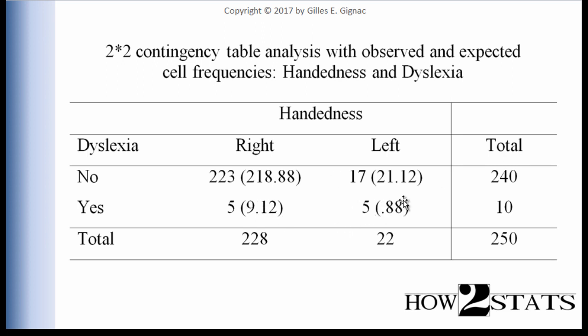One of the biggest discrepancies is the observation of five people who are left-handed and dyslexic, but the expected cell frequency — 22 × 10 ÷ 250 — equals just 0.88. So if the null hypothesis were true and there were no association between handedness and dyslexia, we would expect basically one person to be left-handed and dyslexic. But in this analysis, five people were observed — a pretty big difference from what was expected.